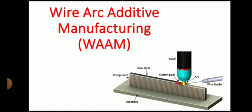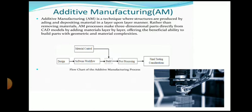It uses the existing welding processes to deposit a material layer by layer. Before understanding wire arc additive manufacturing, we will understand what is additive manufacturing because it is a type of additive manufacturing. Additive manufacturing is a technique where structures are produced by adding and depositing a material in a layer upon layer manner. In additive manufacturing, we deposit the material layer by layer so as to get the final component.